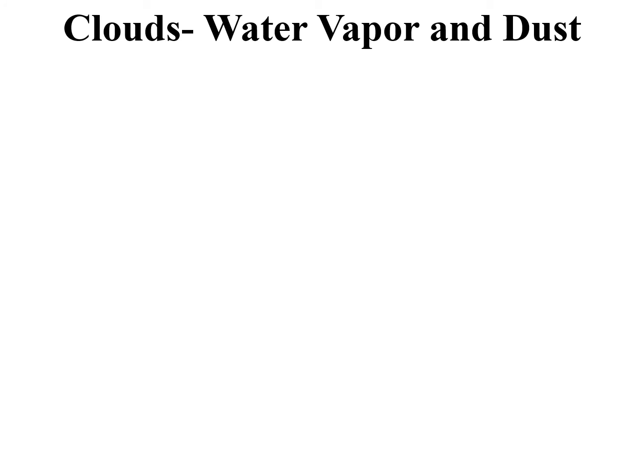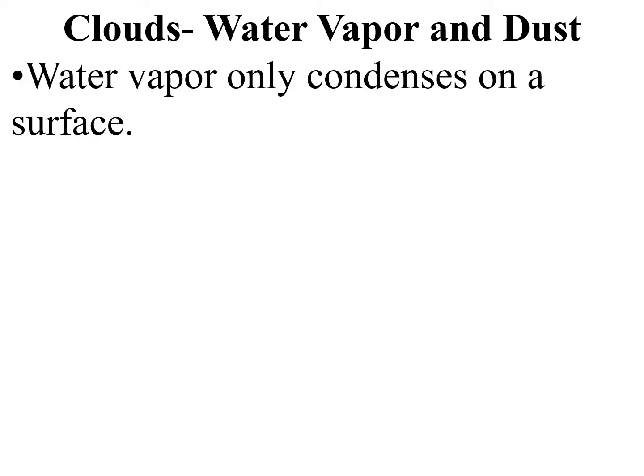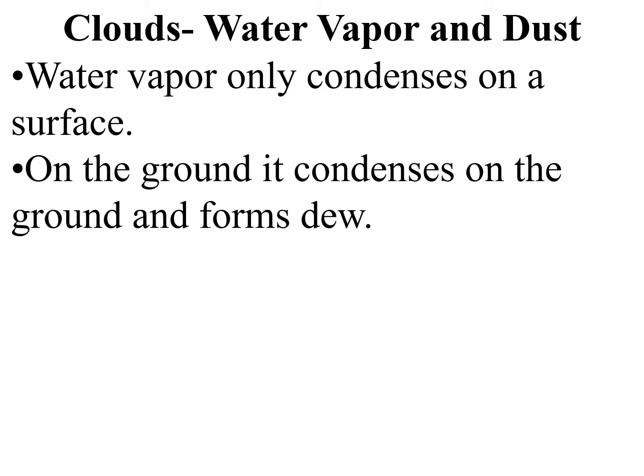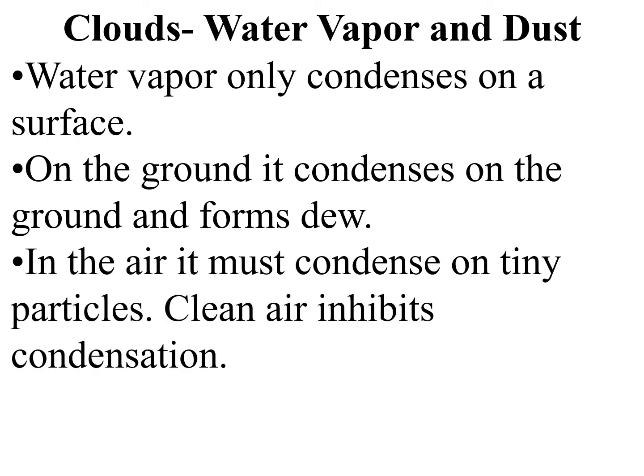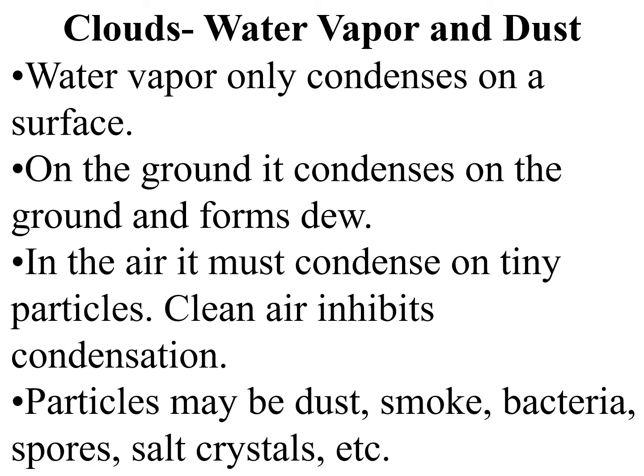In terms of clouds, a cloud has to be made of more than just water vapor — there has to be dust present. Water vapor will only condense on a surface. If it condenses on the ground, we call it dew, and the grass is soaking wet even though it never rained. That was condensation during the night. In the air, it needs something to condense on — tiny particles. If the air is completely clean, it makes condensation much harder to occur. The particles it may condense on might be smoke, dust, bacteria, spores, salt crystals, etc.